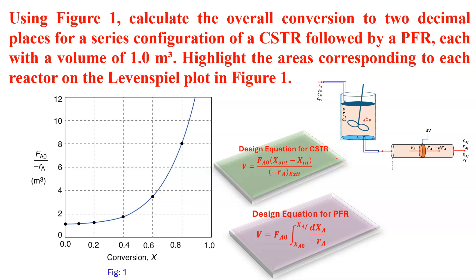I will solve one chemical reaction engineering problem. Here is the problem statement. Using figure 1, calculate the overall conversion to two decimal places for a series configuration of a CSTR followed by a PFR, each with a volume of one meter cube. Highlight the areas corresponding to each reactor on the Levenspiel plot in figure 1.